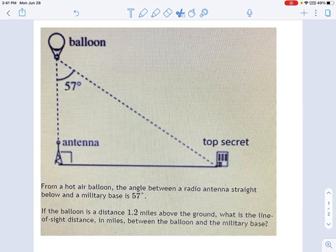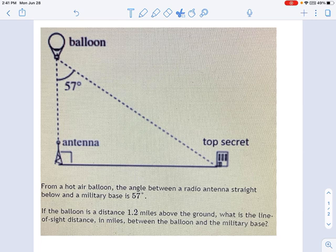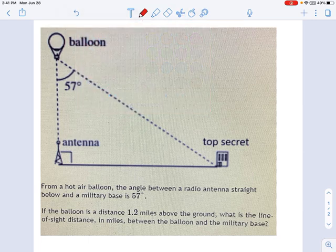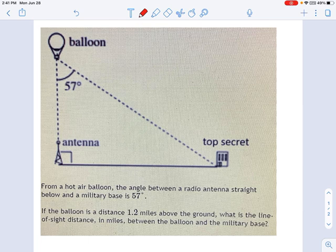So in this problem we're shown what appears to be a triangle. We've got a balloon in the upper left, an antenna in the lower left, and this military base in the lower right, and we're asked some things about the distances between them and we're given some information. So I'm just going to write down the information we're given. It's always important to understand what exactly you're given and what exactly is being asked for.